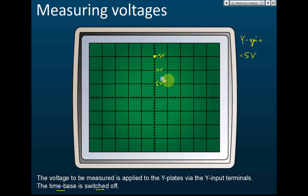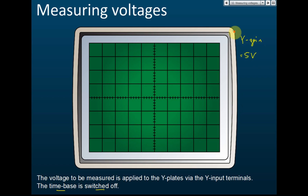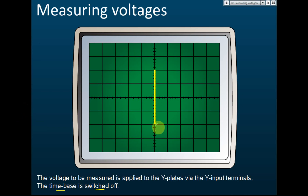That's how we measure voltage — we plug the electric source into the Y input, observe how far the spot deflects from the center, and determine the voltage. For alternating currents, let's say the Y gain is 0.5 volts per division. What is the peak voltage of this alternating current?